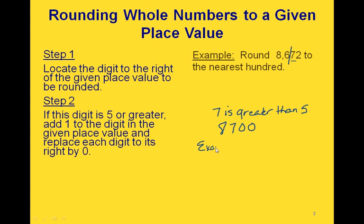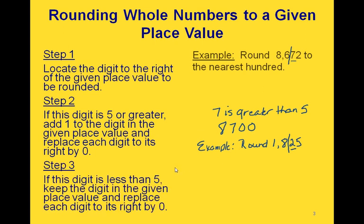Let's look at another example with a different number, rounding to the nearest hundred. Here's our hundreds place, so we draw a line just to the right of it. This time we're looking at the 2, which is not 5 or greater. So we go to step 3: because the 2 is less than 5, we leave the hundreds digit the same, but we still make everything to the right of the line zeros.